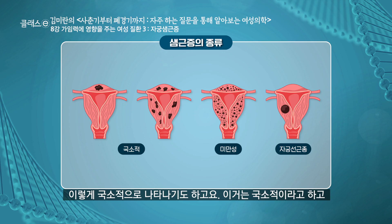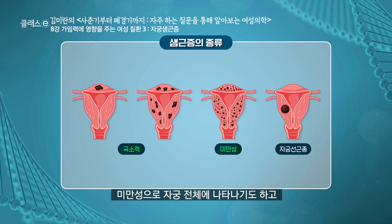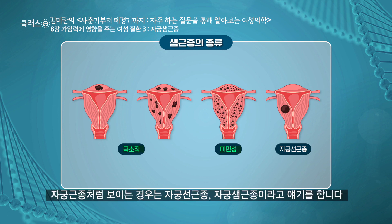자궁 선근증은 여러 가지 양상으로 나타나는데요. 국소적으로 나타나기도 하고, 미만성으로 자궁 전체에 나타나기도 하고, 어떤 경우는 뭉쳐있어서 마치 자궁 근종처럼 보이는 경우를 자궁 선근종이라고 얘기를 합니다.